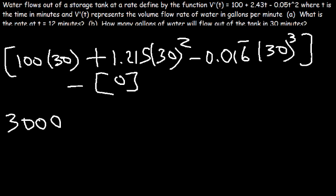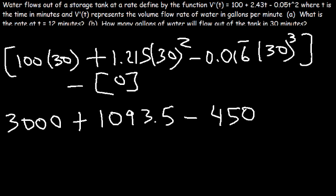100 times 30 is about 3,000. 30 squared times 1.215, that's 1,093.5. 30 cubed times 0.016 repeated, that's about 450. Now let's add these three values. So the final answer is 3,643.5.